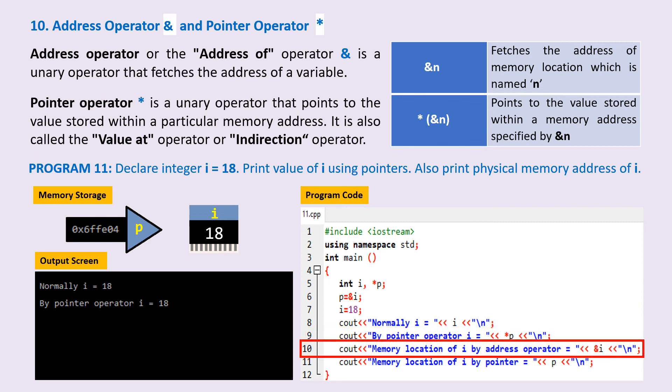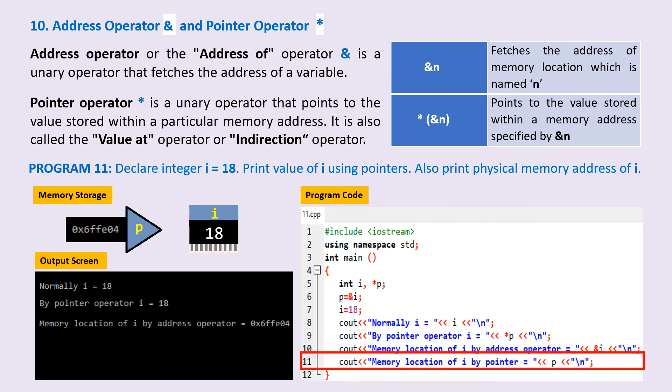On line 10, we are printing the physical address of integer variable i using the address operator ampersand of i. On line 11, we are printing the physical address of integer variable i by invoking it from the address that is stored in pointer p. I hope this makes sense.